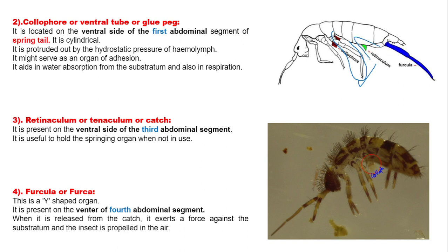Let's see about retinoculum, or tenaculum, or catch. The retinoculum is a structure present on the ventral side of the third abdominal segment of the springtail. This retinoculum or catch holds the springing organ or furcula when it is not in use.